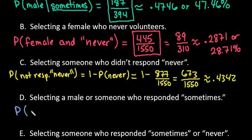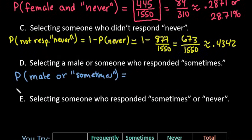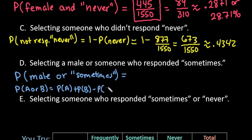The next one that we have is the probability of selecting a male or someone who responds sometimes. For this one, because it is an or probability, remember that there are two possibilities: they are independent of each other or mutually exclusive from each other. Mutually exclusive means they cannot occur at the same time, or they are inclusive which means they can occur at the same time. If we look at our chart, we can see that there are some males that responded with the word sometimes. So for this one, we're going to use the rule: the probability of A or B equals the probability of A plus the probability of B minus the probability of both A and B.